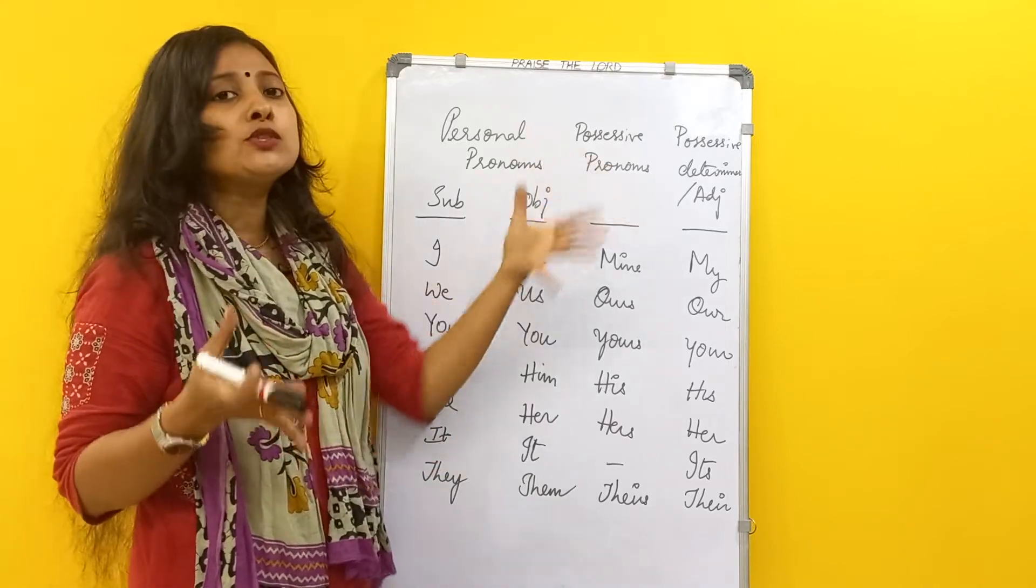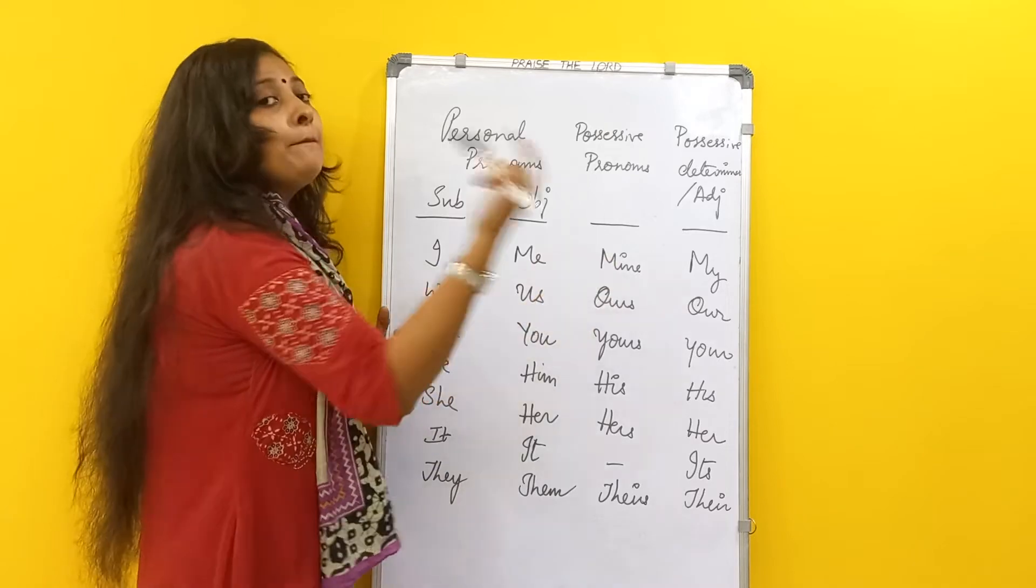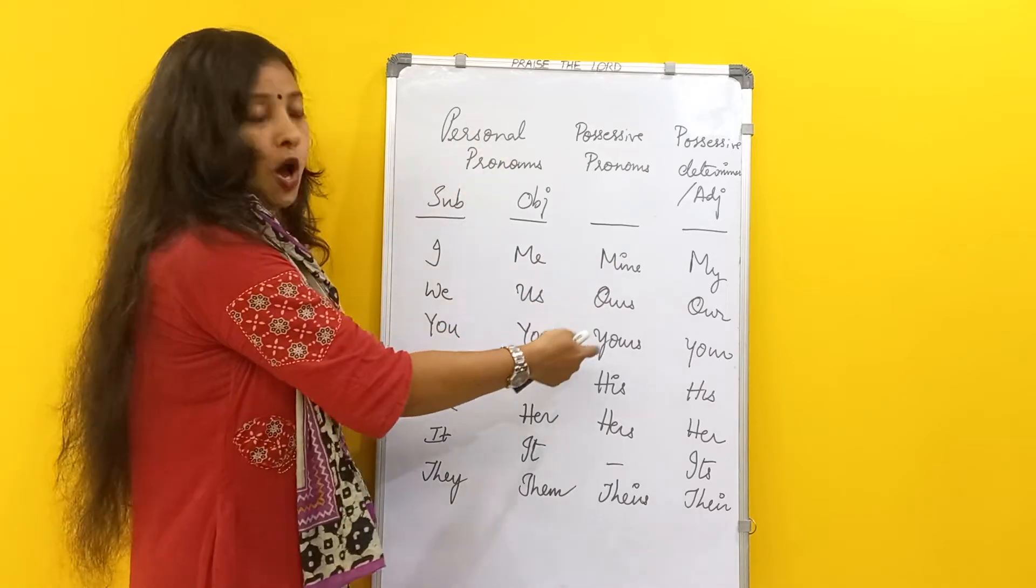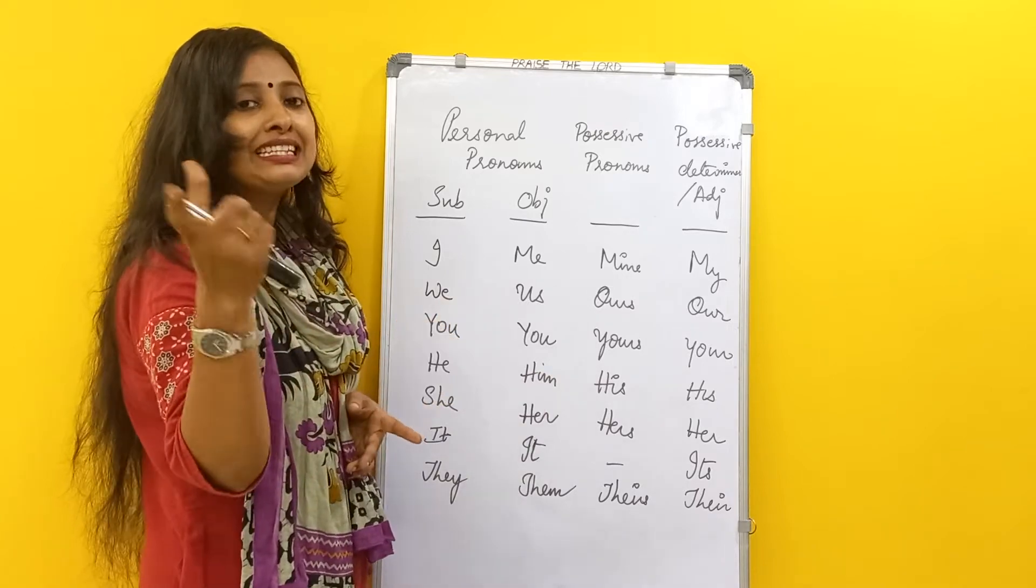Now coming to possessive pronouns which indicate the ownership, they own something so it will become my, ours, yours, his, hers, and there won't be its because animals and things don't own, and theirs.